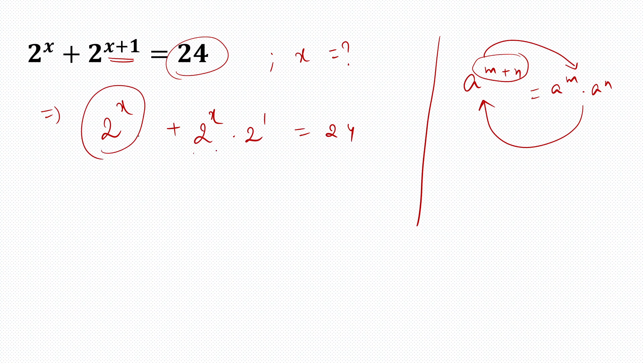Now here we have 2 raised to power x at two places, so basically I can take them common. So I can take them out, 2 raised to power x. Now here I will be left with 1, here I will be left with 2, equal to 24.